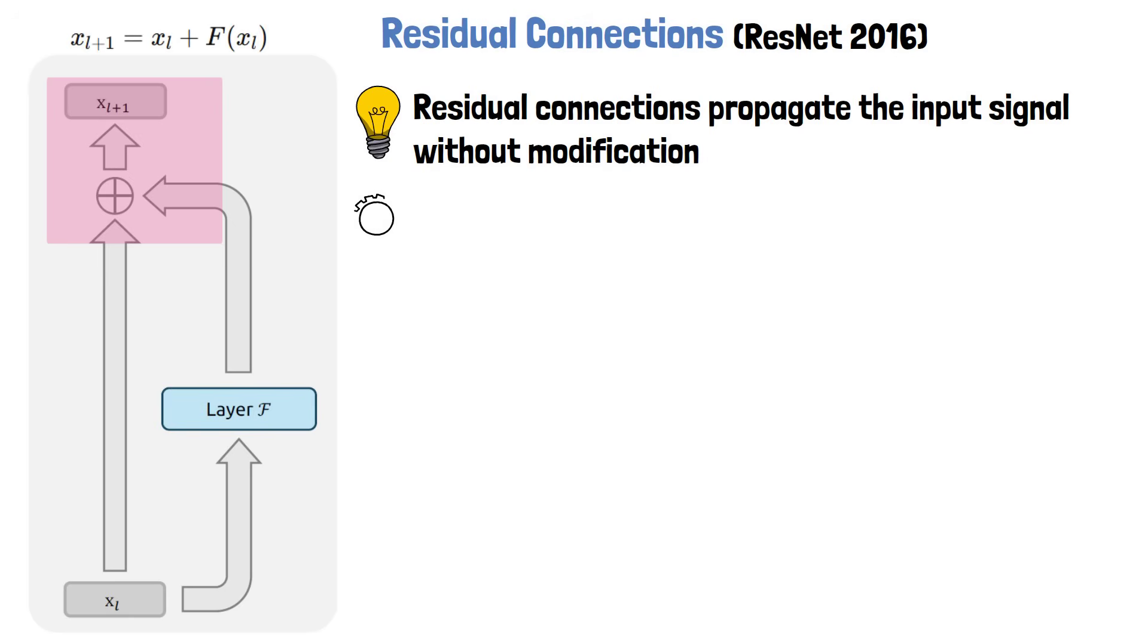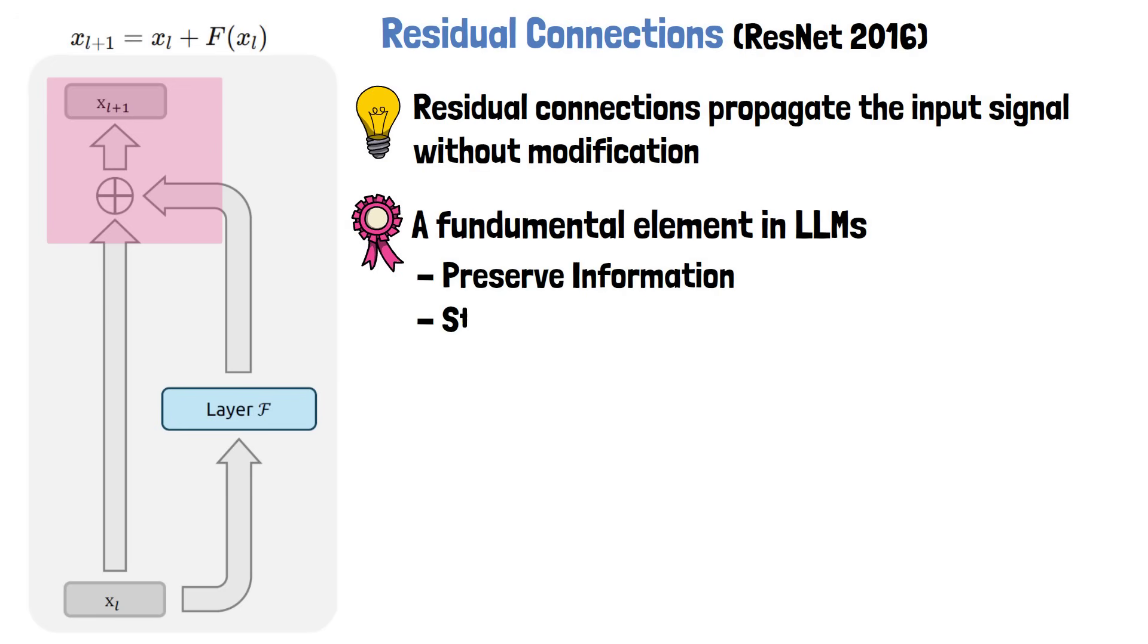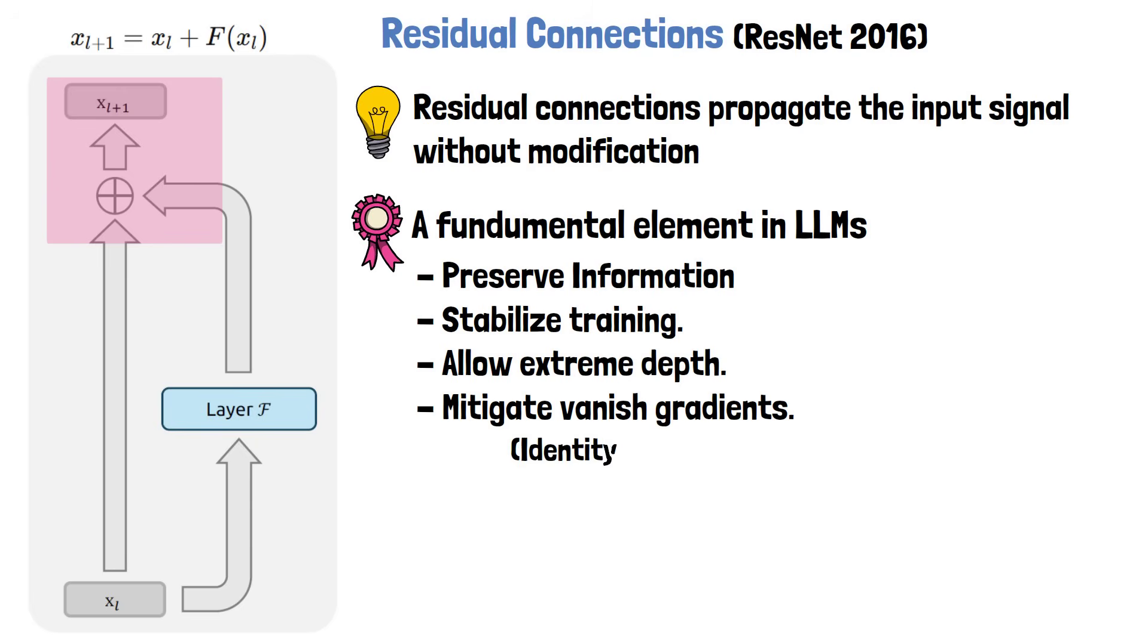While this figure shows a single layer, when stacked across many layers, residual connections allow the original input signal to propagate deep into the network, which helps to preserve information. The residual connections paradigm has established itself as a fundamental design element in the large language models we use today. Residual connections succeeded thanks to their contribution for training stabilization of deep networks and enablement of large-scale training. One main reason for that is that they help mitigate vanishing gradients. The propagation of the input without modifications adds an identity mapping to the function we optimize in training, which has a constant gradient of 1, mitigating cases where the gradient of the F module becomes very small.